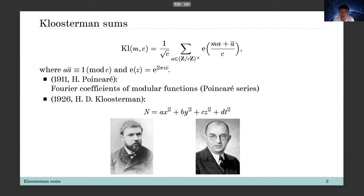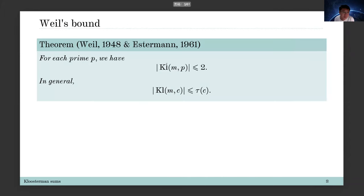For the square root cancellation, there is a very basic estimate due to Weil. In the case of prime moduli, this is a consequence of his proof on the Riemann hypothesis for curves over finite fields. Shortly later, this was generalized to general moduli by Estermann in 1961. For general moduli, this is bounded by the divisor function.